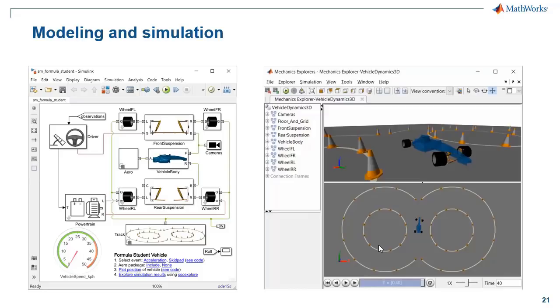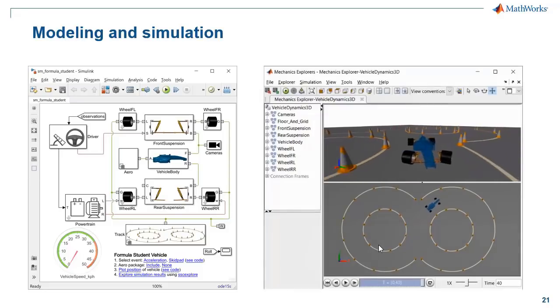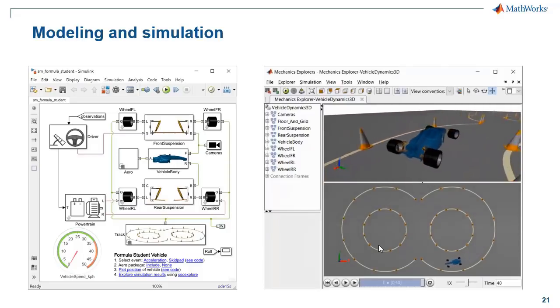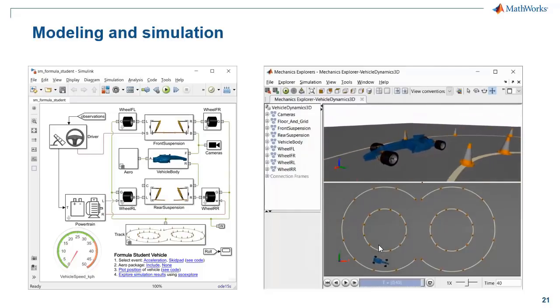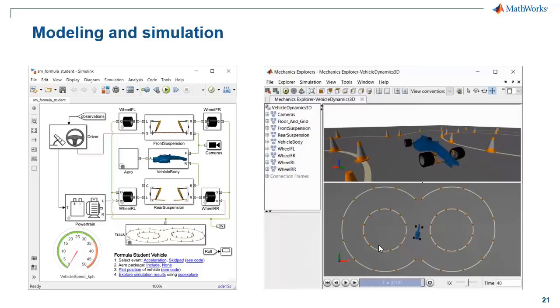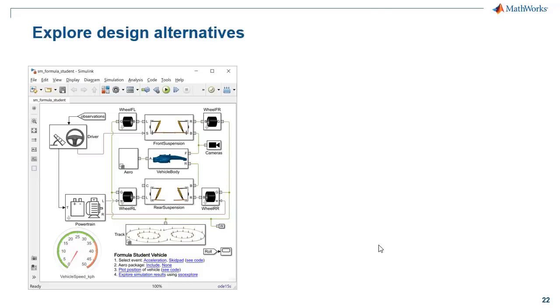So here we have a Simulink model that uses Simscape blocks to represent the various aspects of the physical system, such as the rear and front suspensions, the powertrain, wheels, and so forth. And we have also defined this scene and connected it to the model so that we get a nice visual reference to interpret how the vehicle behaves in simulation. So when we run the simulation, it shows the vehicle going around a figure eight track, and overall it seems to be doing a pretty reasonable job. The car is staying on the track, not swerving off or anything like that. But how do we really know if this is the best design or even necessarily a good design?